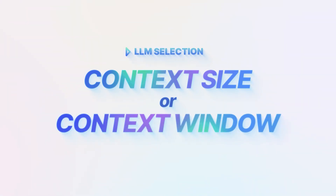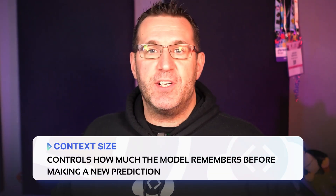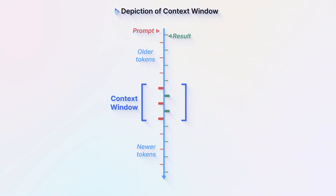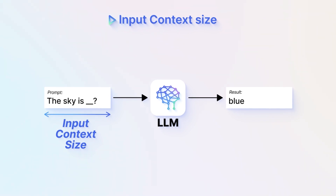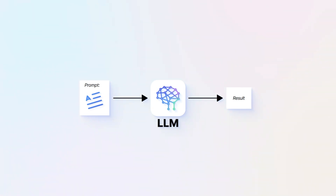Context size, or context window, controls how much the model remembers before making a new prediction. A short window is like goldfish memory; a long window is like elephant memory. It determines how much of the previous conversation is remembered as new results are generated. If that memory is too long, it gets confused, so we have to balance that out — too much context can actually be a bad thing. This is sometimes confused with input context size, which is how large of an input you can send to the model in a query. With some models you can input a few paragraphs for a prompt; other models let you load entire scientific papers. In general, a larger context size is better, but beware of it being too long.